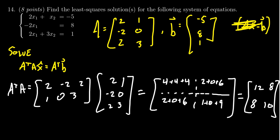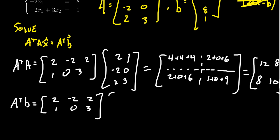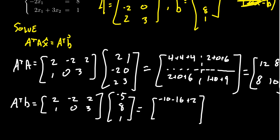Now we compute A transpose b. A transpose is [2, -2, 2; 1, 0, 3] times b = [-5, 8, 1]. We take the dot product of each row of A transpose with b. The first gives negative 10 minus 16 plus 2, which is negative 24. The second gives negative 5 plus 0 plus 3, which is negative 2. So A transpose b equals [-24, -2].